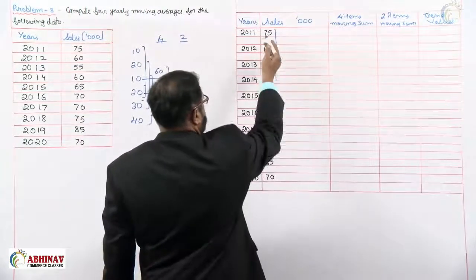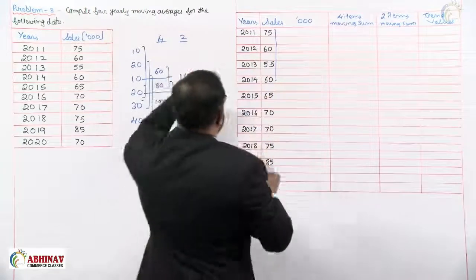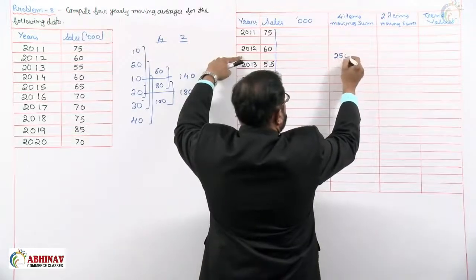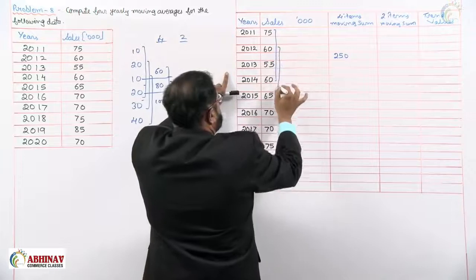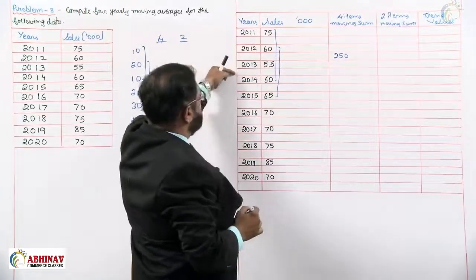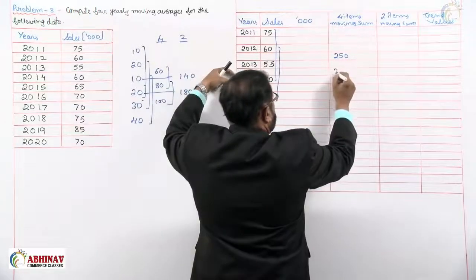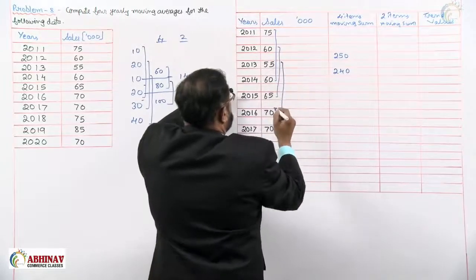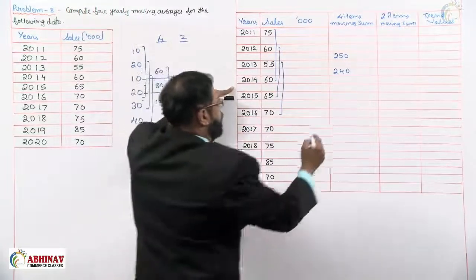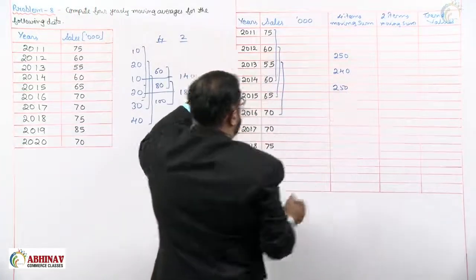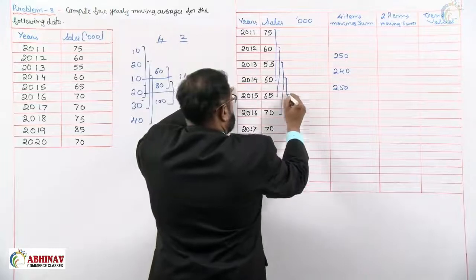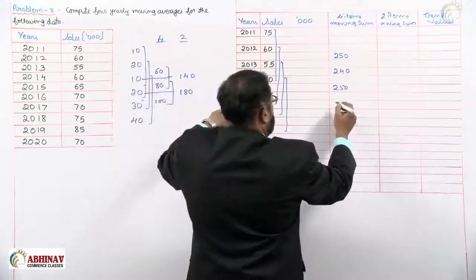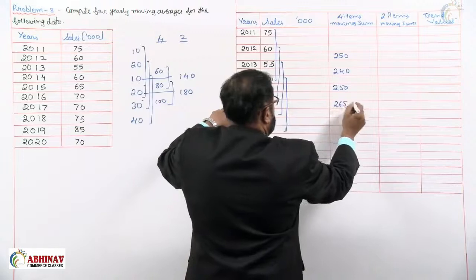The first four items are 75, 60, 55, and 60. The total goes exactly in the middle — between years 12 and 13 — giving 250. The next four items, in the middle between years 13 and 14, give 240. Then the next four items, in the middle between years 14 and 15, give 250. The next four items, from year 14 to 17, in the middle between years 15 and 16, give 265.